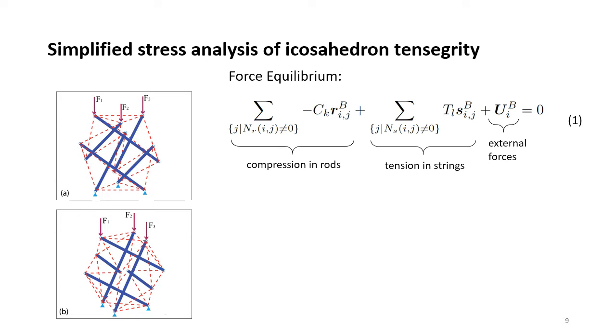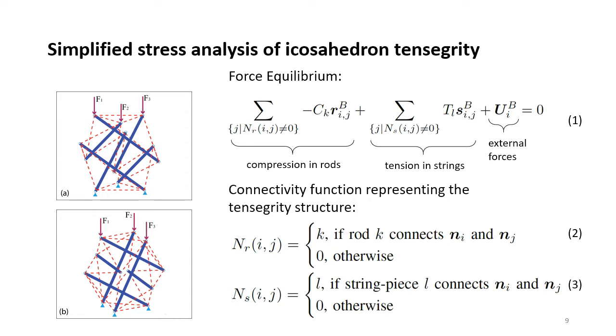The equation shows that for each node, force from rods, force from strings, and the external forces are balanced out. It is noteworthy that nr and ns here stand for the connectivity function, representing the structure of the tensegrity. nr_ij equals to k if rod k connects node i and j. Similarly, ns_ij equals to l if string piece l connects node i and j.